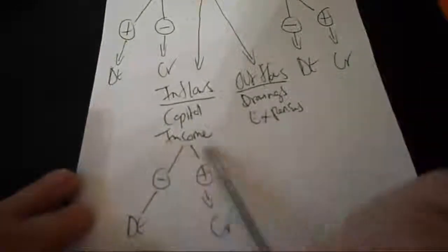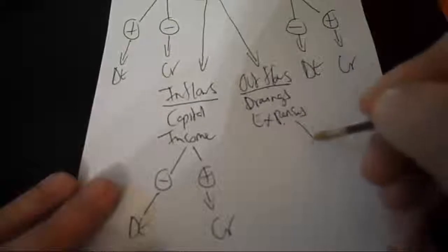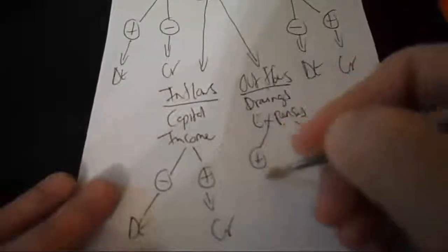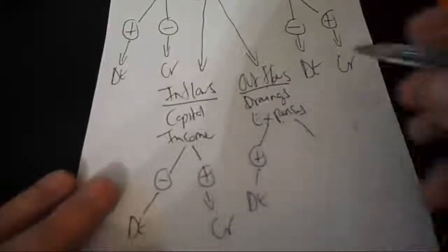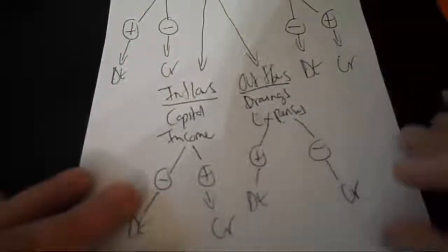And then you'll apply just the opposite to your outflows. When your outflows increase you'll post it to the debit side, and when your outflows decrease you'll post it to the credit side.